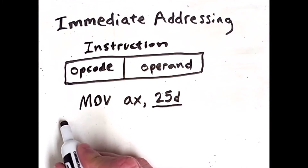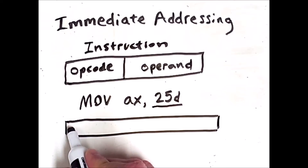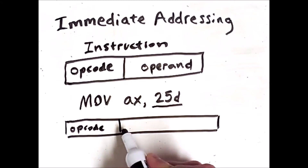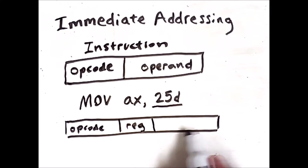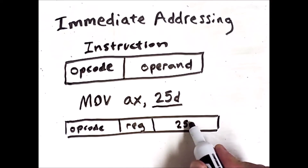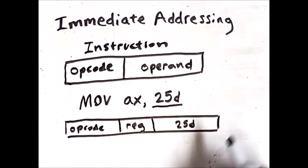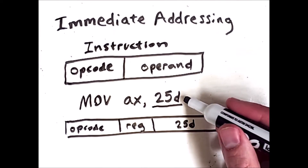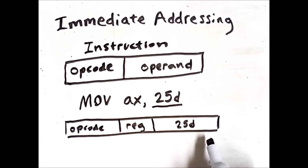If we look at how this instruction is formatted, we would see that some portion is dedicated to the opcode, some portion is dedicated to defining AX, and then we have some bits that are the actual number 25 encoded in binary. Because instructions have limited length, using immediate addressing means there's a limit on the size of the operand that can be specified — however many bits are reserved for this operand indicate what the maximum operand value can possibly be. So that is one limitation of immediate addressing.